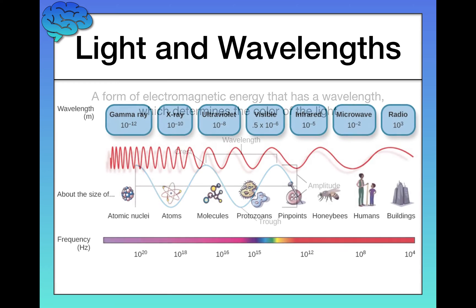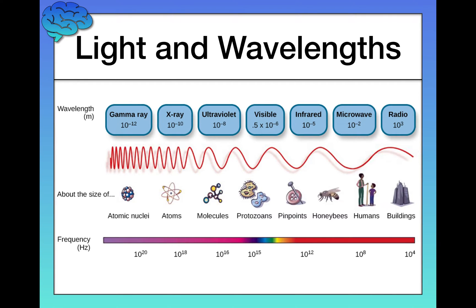I want to pause and make a note about the huge variability in wavelengths between different forms of light. Take a look at the top portion of this visualization here. Notice gamma rays have wavelengths of 10 to the negative 12 meters. In case you aren't familiar with scientific notation, 10 to the negative 12 is a very tiny number.